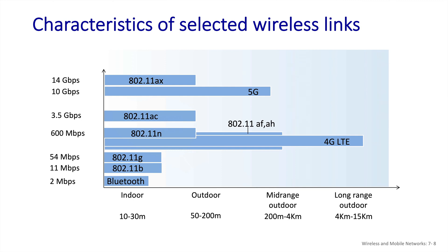Most current consumer devices use the 802.11ac protocol, which is backwards compatible with 802.11n, g, and b. We're also starting to see consumer devices marketed as Wi-Fi 6, which is the marketing name for 802.11ax. We should also note that the faster speeds rely on bonding multiple channels together, so many devices do not support the peak speed that is supported by the protocol.